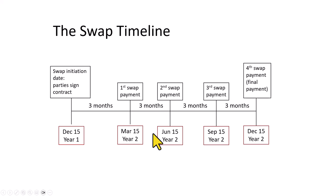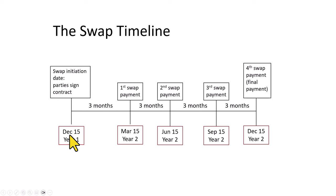You might ask why we're doing this. One important reason is to avoid unpleasant surprises about what the variable interest rate will turn out to be on the payment date. For example, if the variable rate on the payment date is much higher than expected, the party responsible for that payment will likely find it difficult to pay. So to avoid that, the parties base the variable rate payments for each period on the previous period's variable rate — they are better prepared ahead of time. No surprises, no shocks.